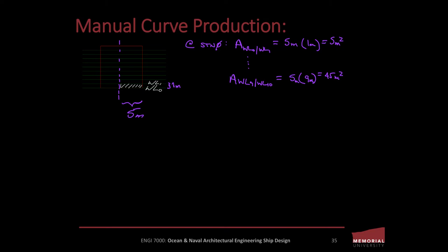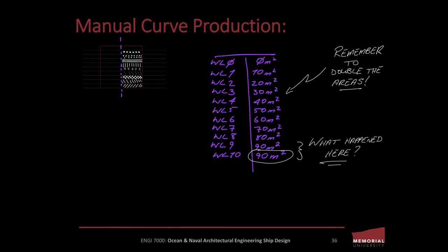Beginning with an area of 0 square meters at waterline 0 and terminating at 45 square meters at waterline 9, we can tabulate our underwater area at each waterline for station zero. Now take a look at the table I've created for station zero. Our initial waterline, waterline 0, is at the keel, so at the ship's baseline there is no cross-sectional area immersed, and subsequently the area we record is 0 square meters. Note in the table that I've remembered to double all of my calculated areas to reflect the fact that there is another half of a ship to account for.